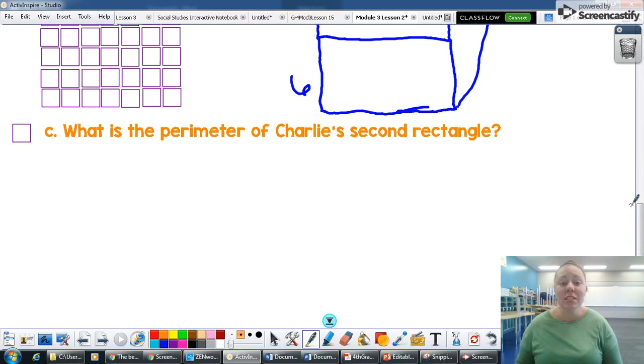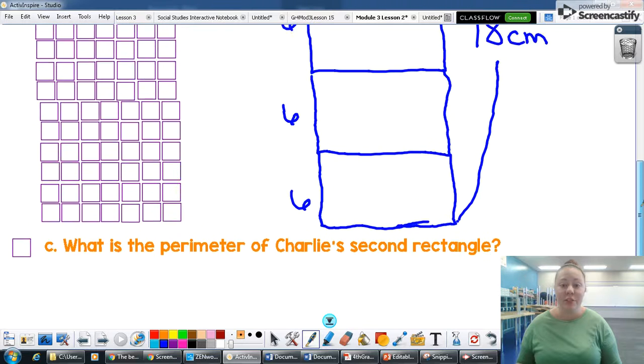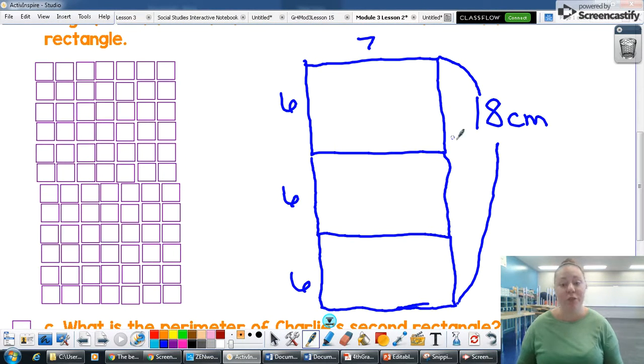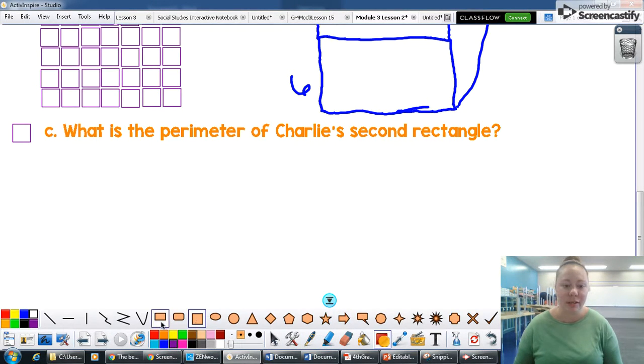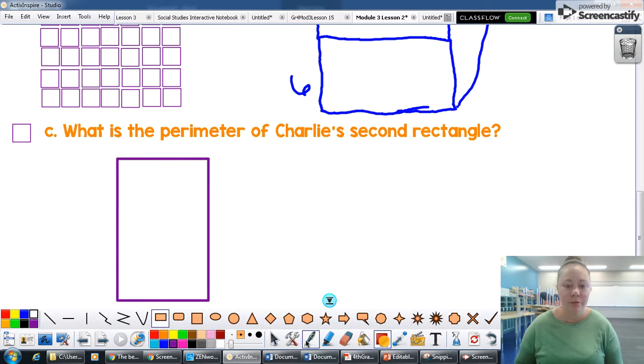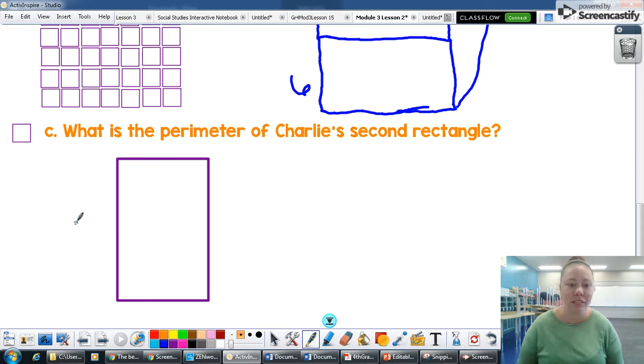The last question is, what is the perimeter of Charlie's second rectangle? So I know that the perimeter is the distance around the outside. So I'm going to go back to my previous drawing. And I know the whole side length is 18 centimeters. And this side is seven. So I'm going to just redraw that quickly down here. I'll use my shape tool so that way I get a little bit nicer for you. I'm going to draw it a little bit smaller so I have space to work.